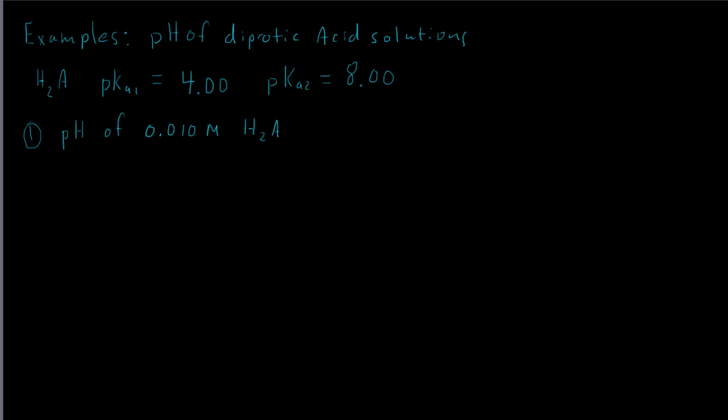We have a diprotic acid, H2A, where A represents the rest of the molecule and the two H's are the two protons that can be donated. There are two pKa's associated with this acid: pKa1 is 4 and pKa2 is 8.